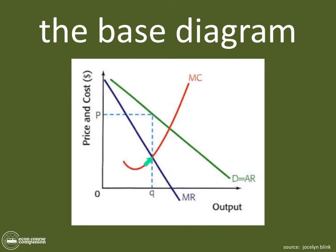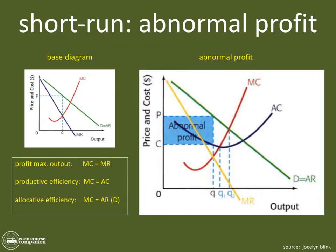The marginal cost curve shows you the profit-maximizing level of output — the quantity that, if this firm in monopolistic competition produces it, gives it the highest chances of having profits. It doesn't mean it actually will. You take that quantity up to the demand curve, then over to price, and there you have the base diagram. It's the same diagram used in monopoly for all levels of profit, and for all profit levels in monopolistic competition.